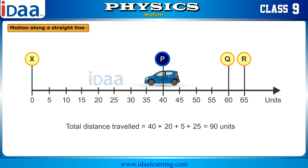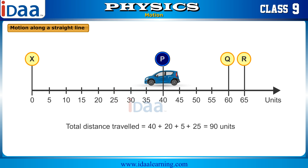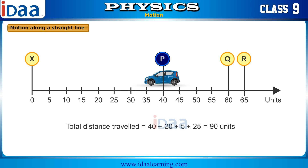Displacement, on the other hand, needs both magnitude and direction for its description. In the example, we see that the object has moved just 40 units if we compare the initial and the final points of its travel. So the displacement of the object is 40 units to the right.